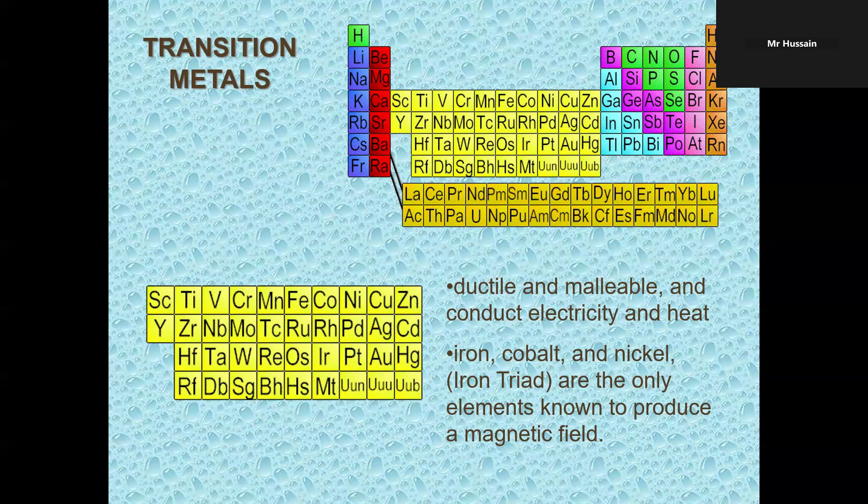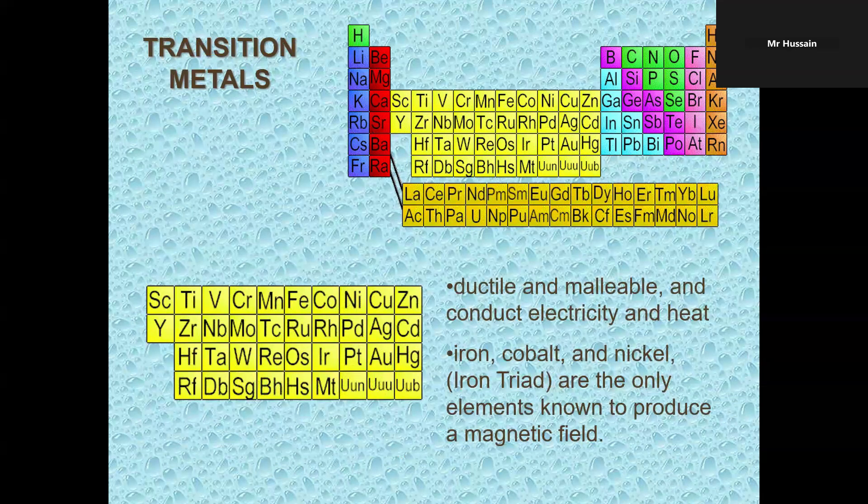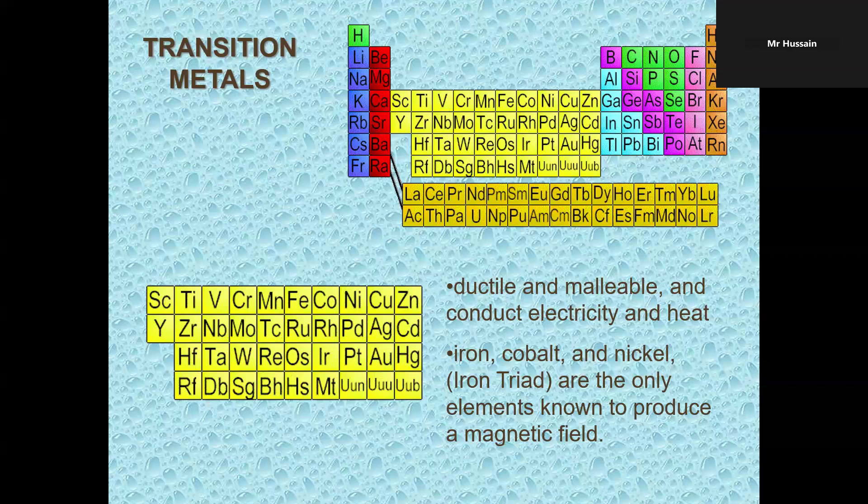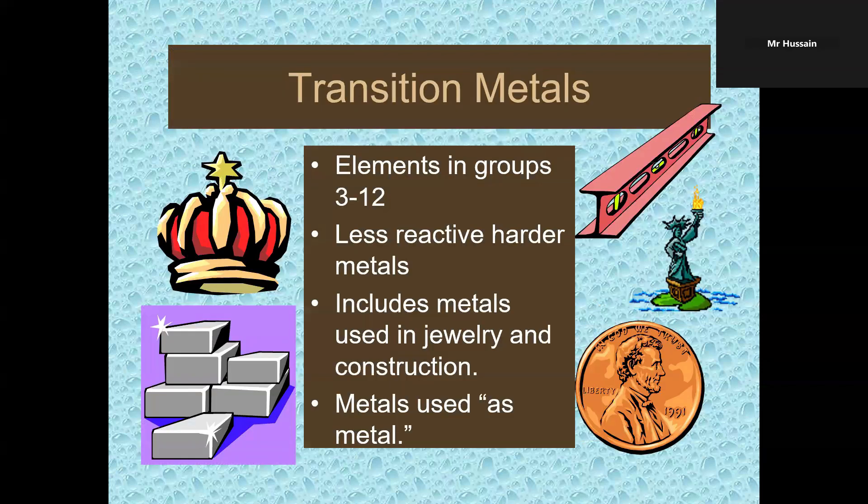From group three through twelve, they are called transition metals. They are ductile. Ductile means you can make wires out of those metals. Malleable, you can convert those metals into thin plates if you hammer them. In these metals, iron, cobalt, and nickel can attract a magnet. So iron, cobalt, and nickel are the only elements known to produce a magnetic field. Transition metals, group three through 12, are less reactive, they are hard, and they are used in jewelry and constructions.